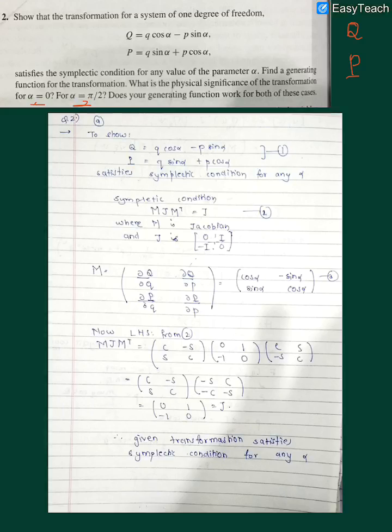For the part A, we have to show that in equation 1, I have written the given question that satisfies the symplectic condition. By equation 2, I have shown the symplectic condition where M is the Jacobian of variables q, p, capital Q and capital P with respect to small q and small p. This Jacobian is represented by this matrix.